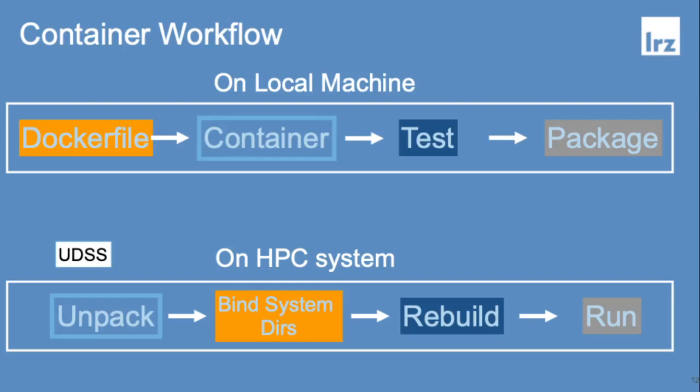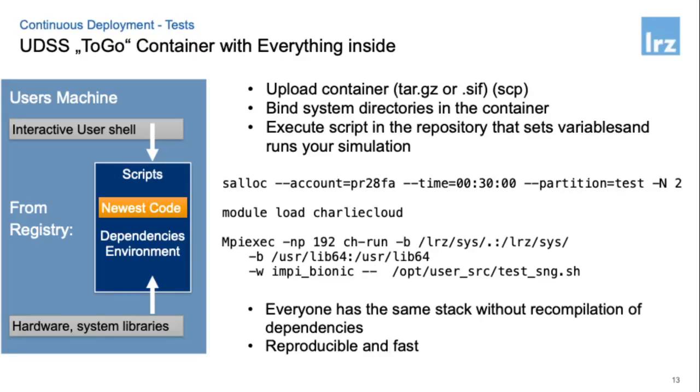The workflow is: on your local machine, you have a recipe — for example, a Dockerfile — build it into a container, test and play around with the image to see if things work, then package it into a file. You upload that file to the HPC system, unpack it, and bind certain system directories containing modules and libraries. You can take a shell inside your image, rebuild things if necessary, and then run your simulation. You can also have scripts packaged inside your image, which is recommended, and bind hardware system libraries from the host system.